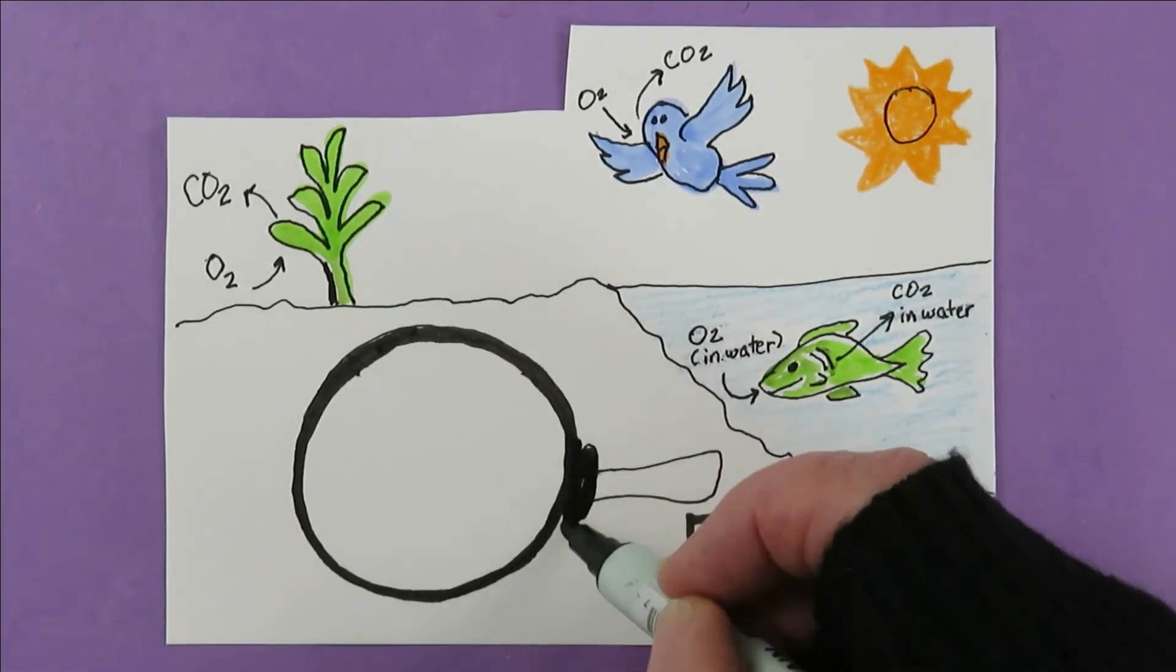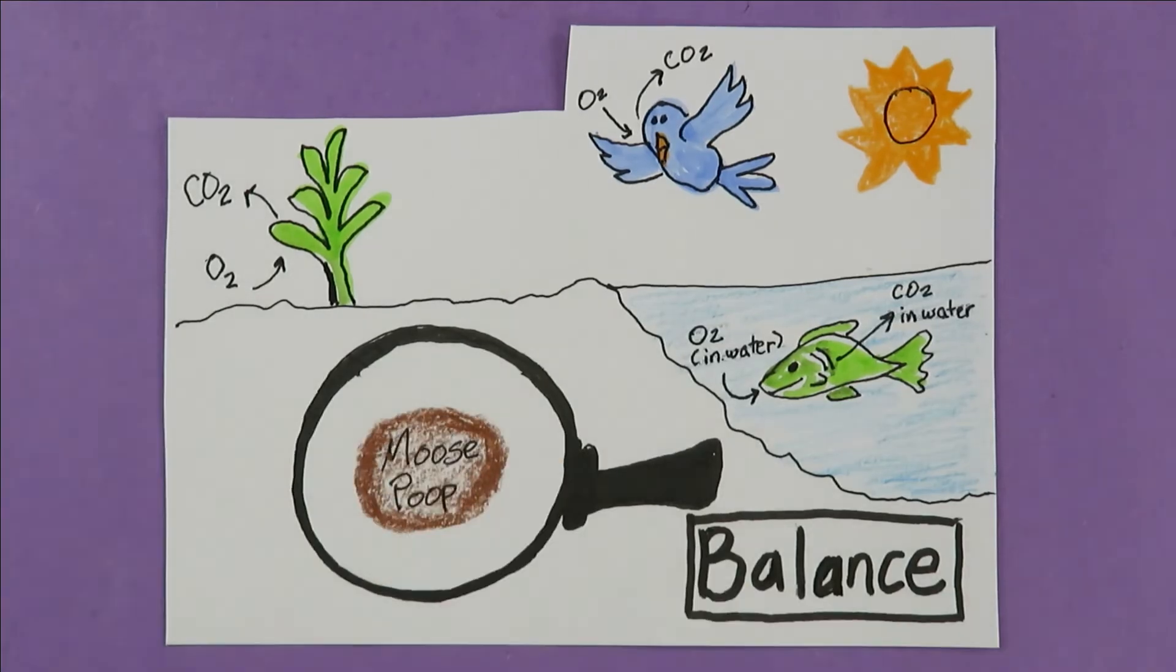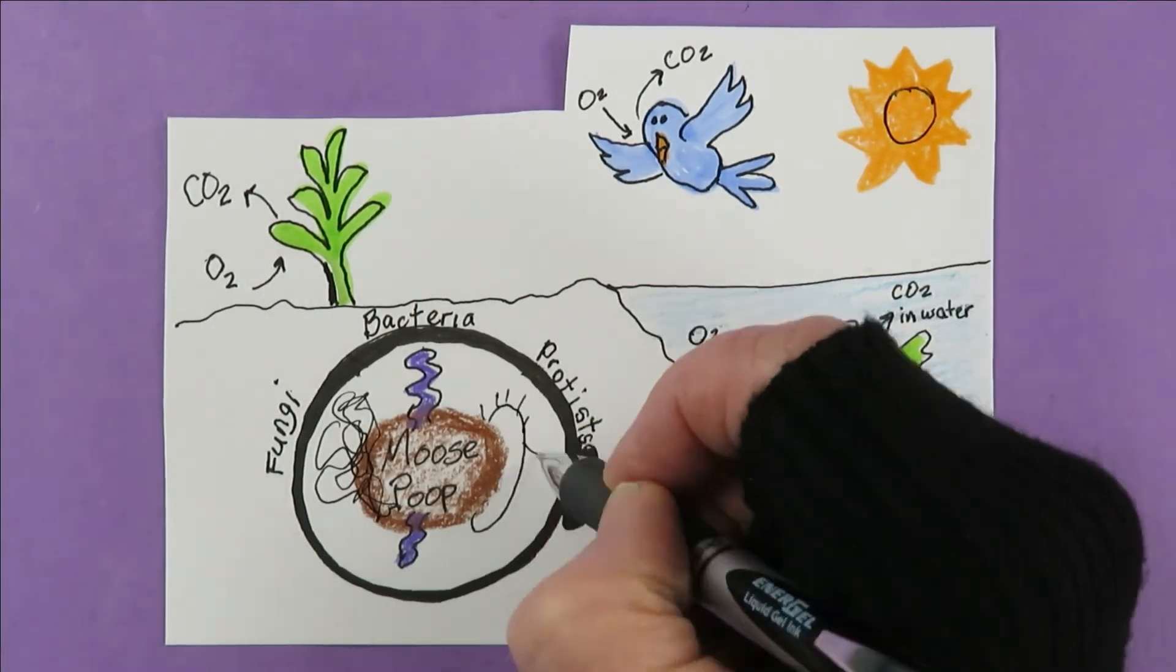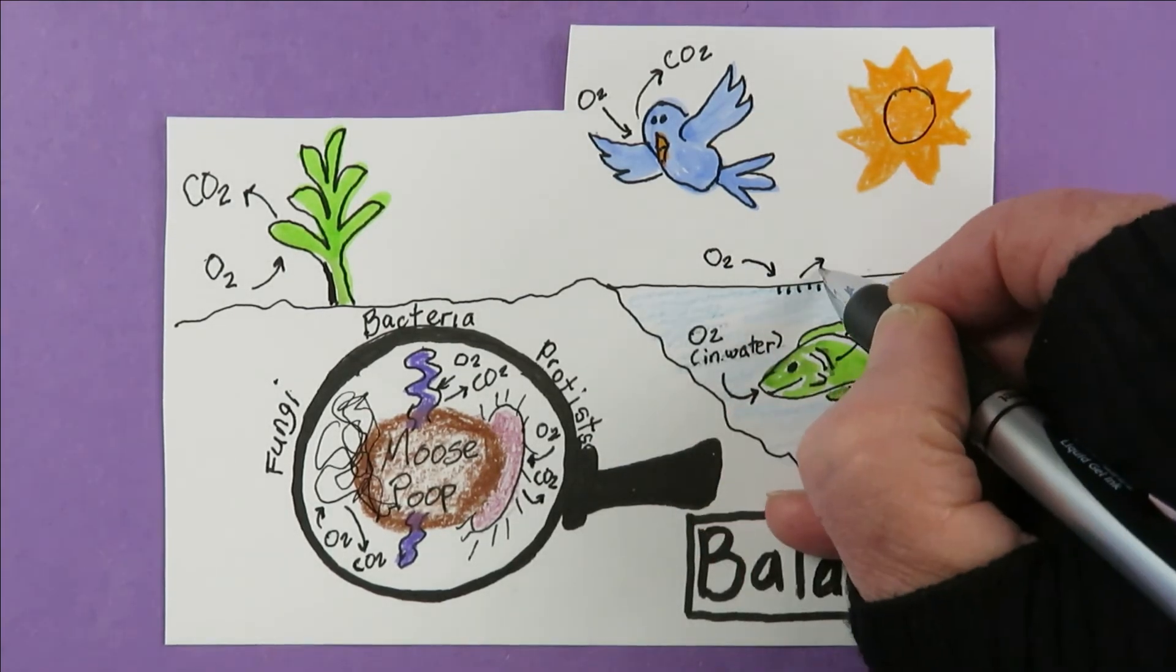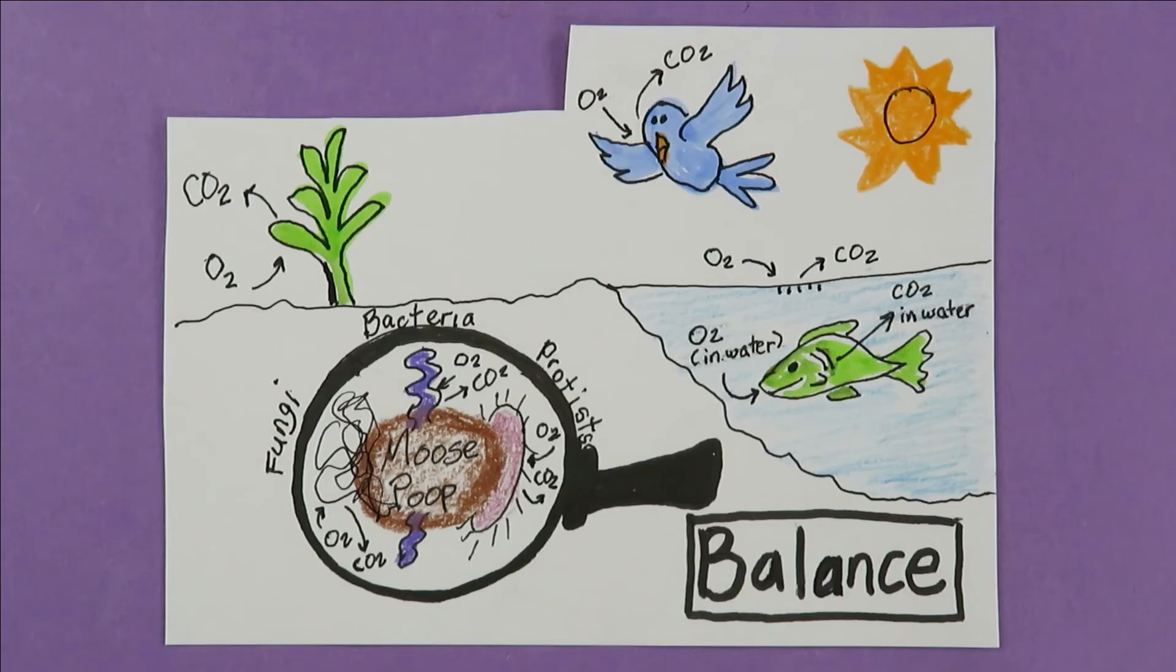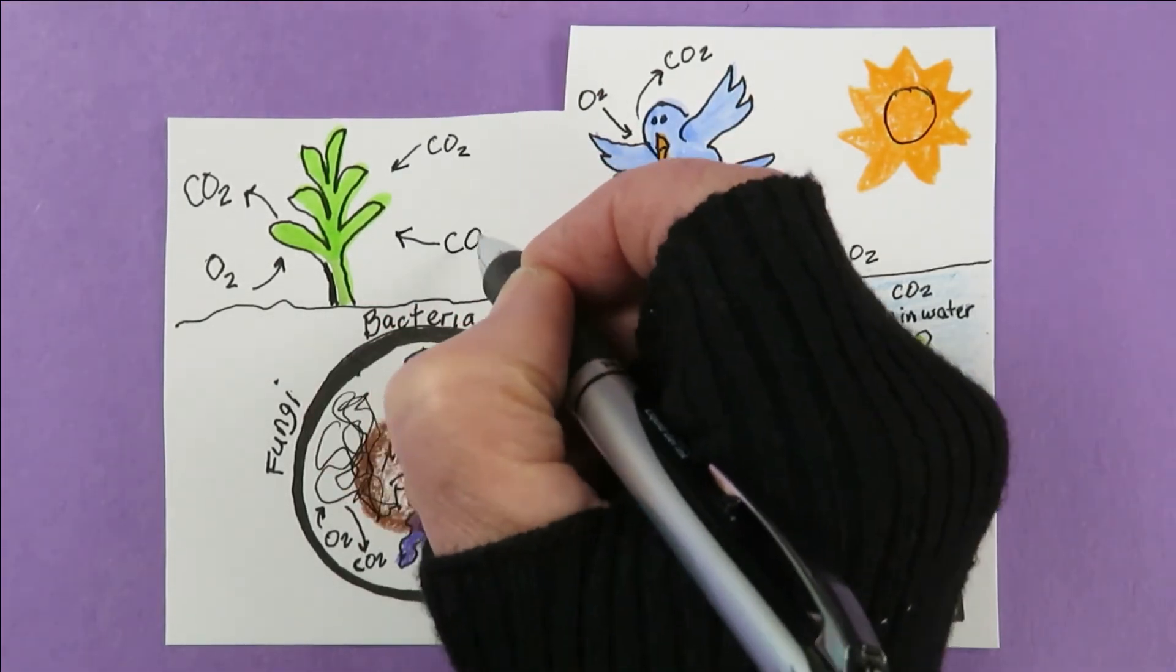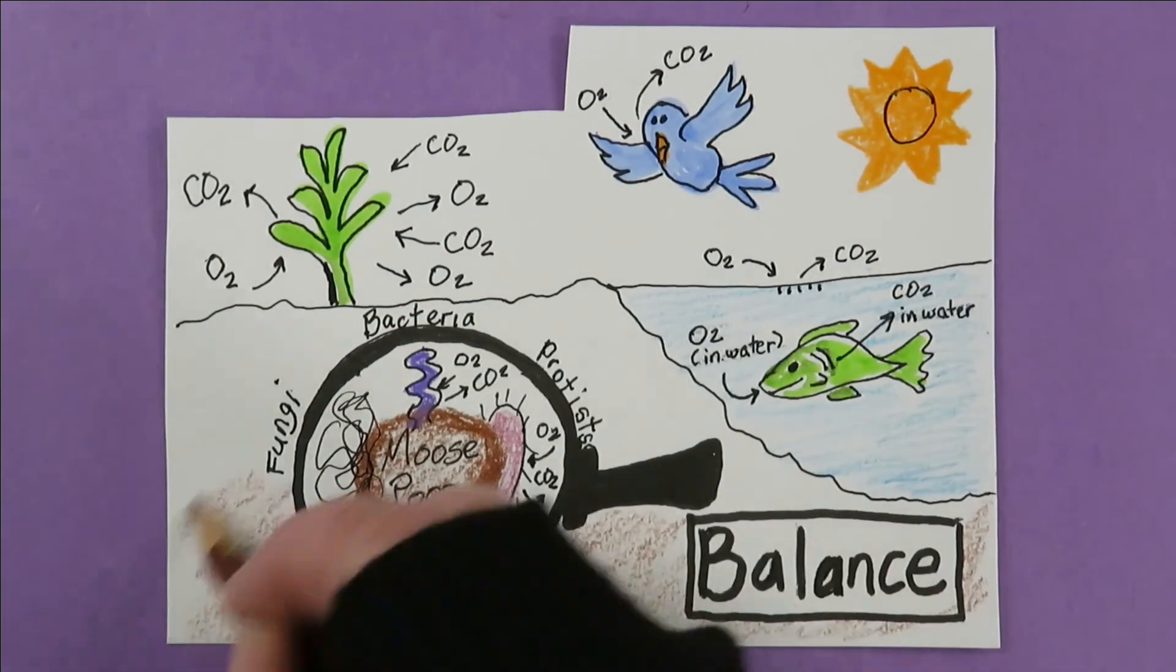And lots of decomposers like fungi, bacteria, and protists take in oxygen to turn things like moose poop into CO2, water, and chemical energy. Even mosquito larvae is breathing through their butt snorkels. Yes, that's a thing. Take in oxygen and give off CO2. It's all good. Plants will use that CO2 to photosynthesize.